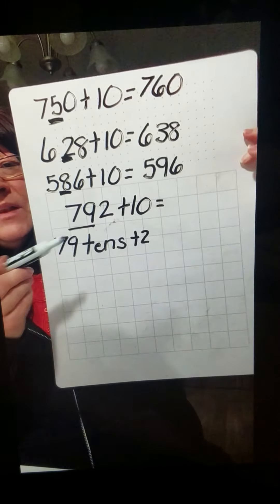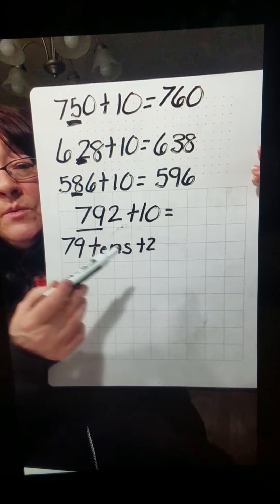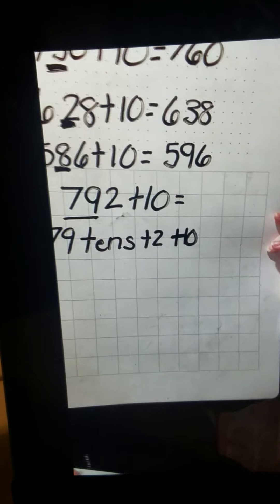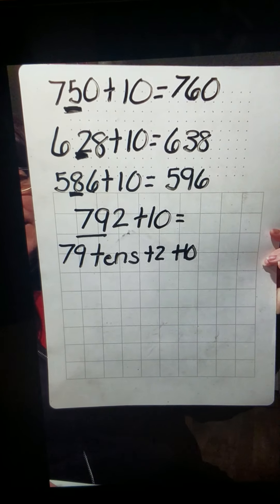So we add 79 groups of 10 plus the 2 in the ones place, plus we're going to add the 10. So now we're going to add the 10 there. So how could we make this easy on ourselves?